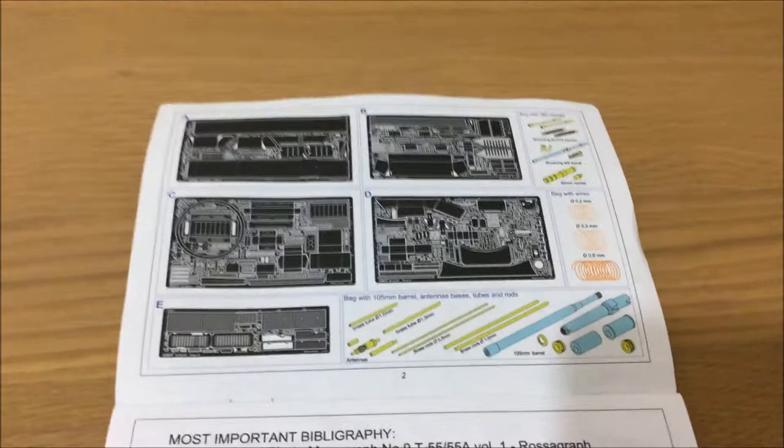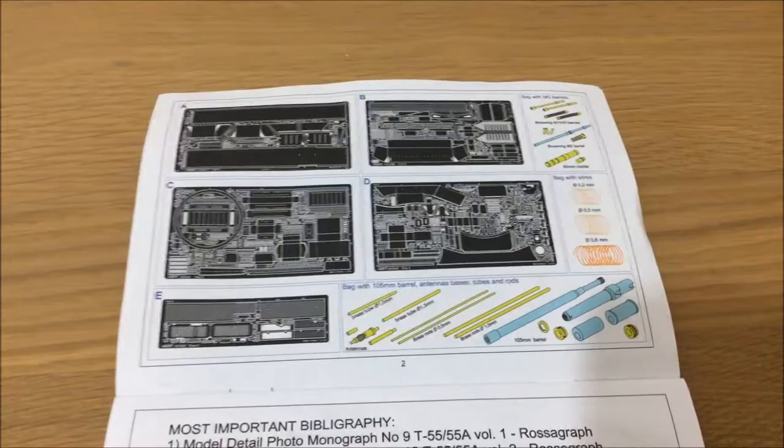Here we have the instruction sheet with a nice line drawing on the front. This is what you get in the box: five sheets of photo-etch and all the other bits and pieces.